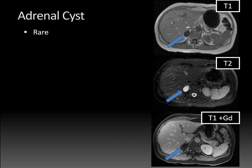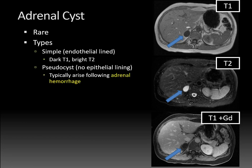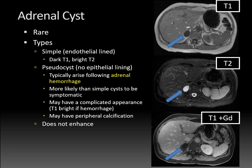Adrenal cysts are not very common. There are two major types: the simple type, which is endothelial-lined, tends to be dark on T1 and bright on T2 following simple fluid — like in this case. And then there's the pseudocyst, which has no epithelial lining. Pseudocysts usually arise following adrenal hemorrhage and are more likely than simple cysts to be symptomatic. They may have a complicated appearance with T1 bright signal if there's hemorrhage within them, which can also be T2 dark, and there may be peripheral calcification. If these become symptomatic, they can be removed laparoscopically.